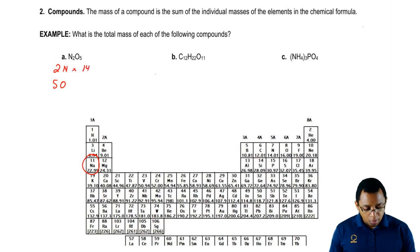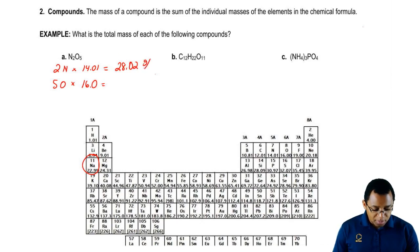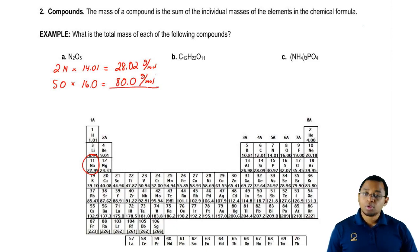Each nitrogen is 14.01 grams per mole and oxygen is 16 grams per mole. This is going to give us 28.02 grams per mole and this will give us 80 grams per mole. The combined weight all together would be 108.02 grams per mole.